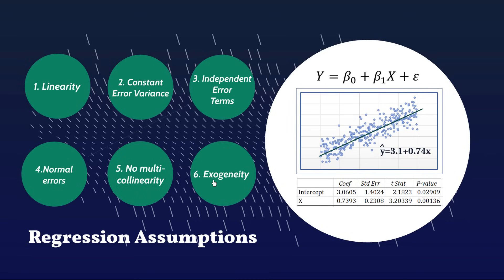Depending on your textbook or your source, you could get listed anywhere between four to nine different regression assumptions. In fact, I think I saw some website that said ten regression assumptions. Don't be too concerned. The difference in number generally is because they might split one of these assumptions into component parts, so with the six I've got here, you're covered for everything you need to be covered by.